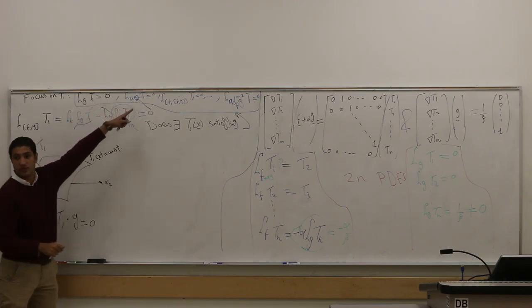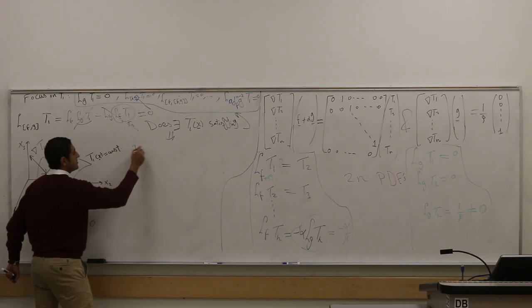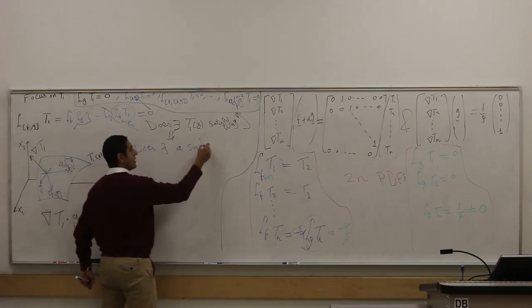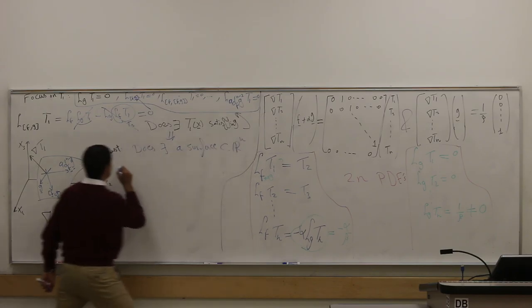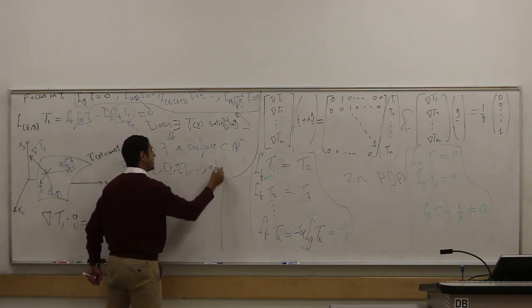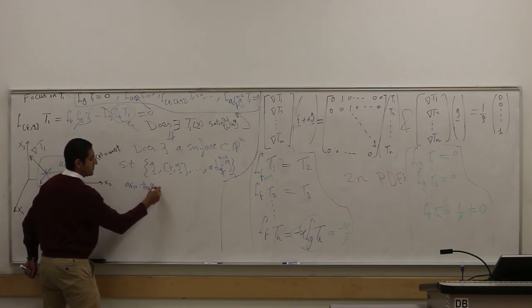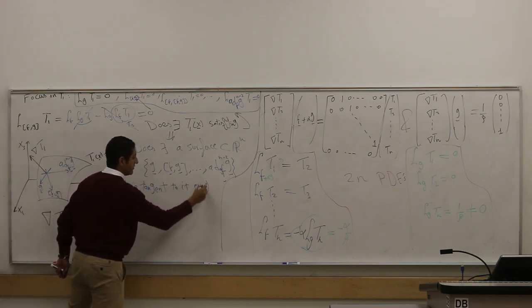But this is not only for g. It's also [f,g]. So [f,g] must be tangent, right? All of them until this guy, which is ad^(n-2)_f g. They are n-1 vectors. They all must be tangent. If I can do all these things, it means that these guys are tangent on the surface that we're looking for. So the question now is, does there exist a surface, embedded in R^n such that these vectors, which is g, [f,g], until ad^(n-2)_f g, are tangent to that surface? Everywhere. Locally around the point that you're interested in.